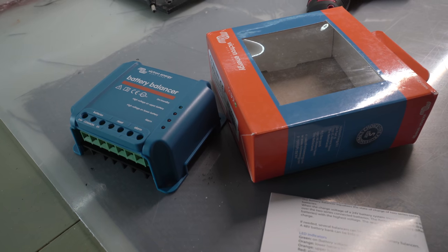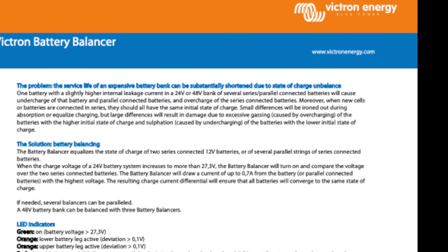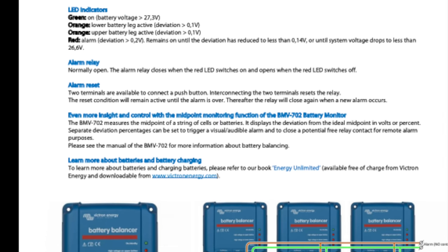I want to mount it somewhere unobtrusive, and thought the inner inside of the, yes, vented, battery box lid would be an efficient use of space, but then I saw this in the instructions.